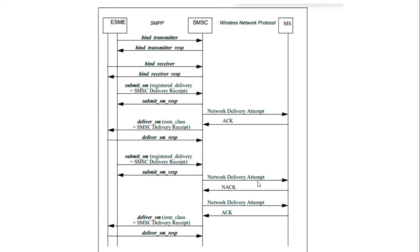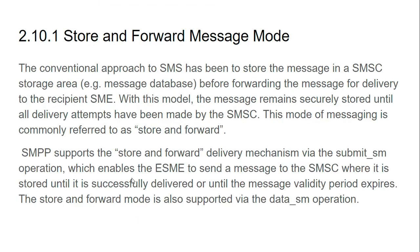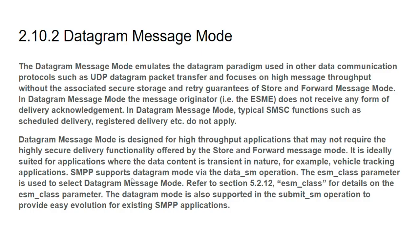If there is a network issue while submitting the SMS to the mobile station, or if there is a delivery attempt issue and a NACK message is received from the mobile station, it keeps the data in the database and after a while it retries the SMS again to the mobile station. If the delivery is successful it sends the deliver SM; otherwise it tries for the maximum possible attempts and once those are exhausted it sends a failure message to the ESME.